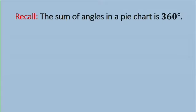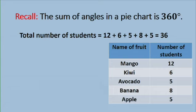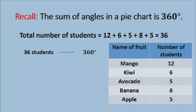Remember that the sum of angles in a pie chart is 360 degrees. The total number of students will be 12 plus 6 plus 5 plus 8 plus 5, which gives us a total of 36. So we have 36 students in the class. These 36 students will represent 360 degrees. One student will represent 360 degrees over 36, that is 10 degrees.